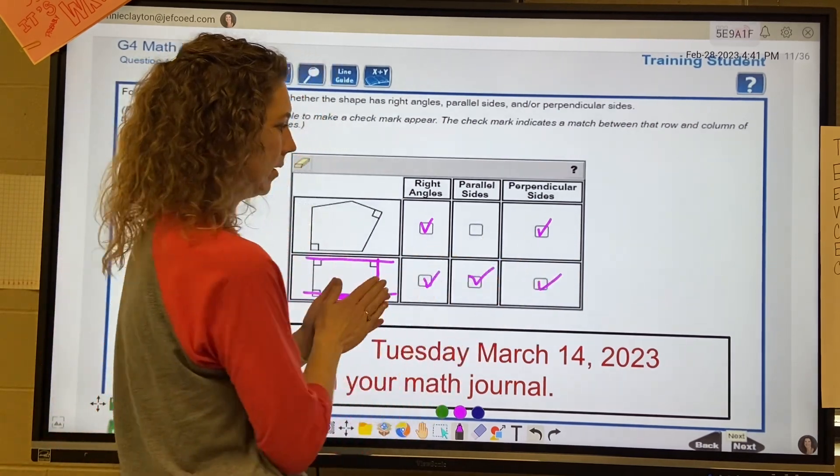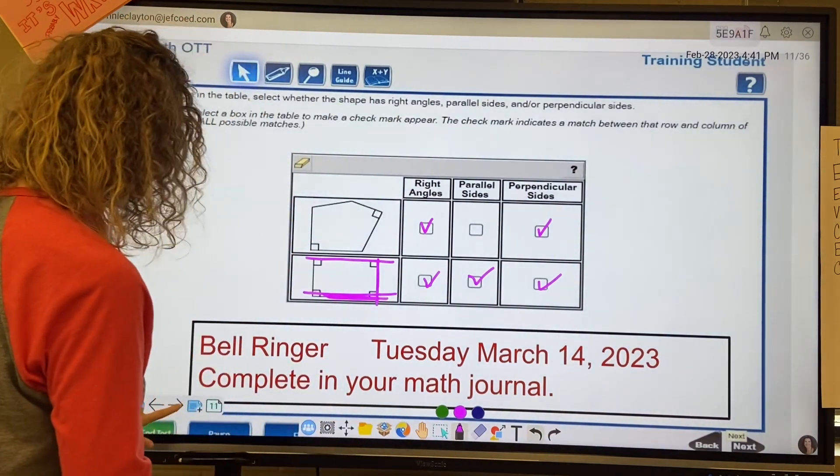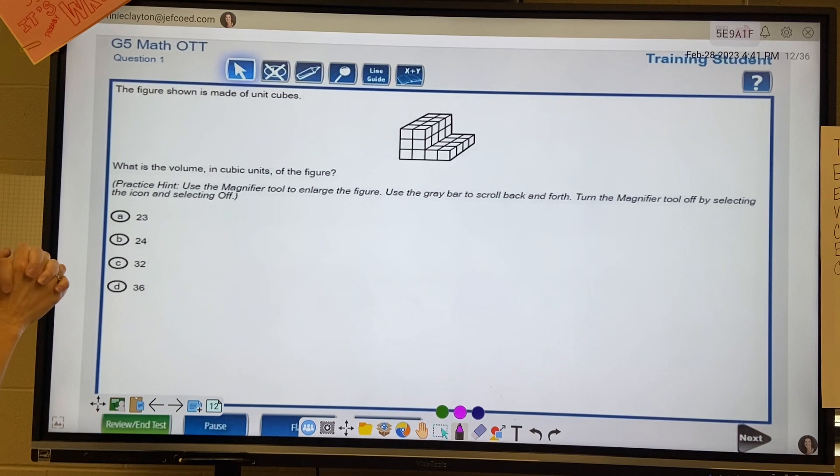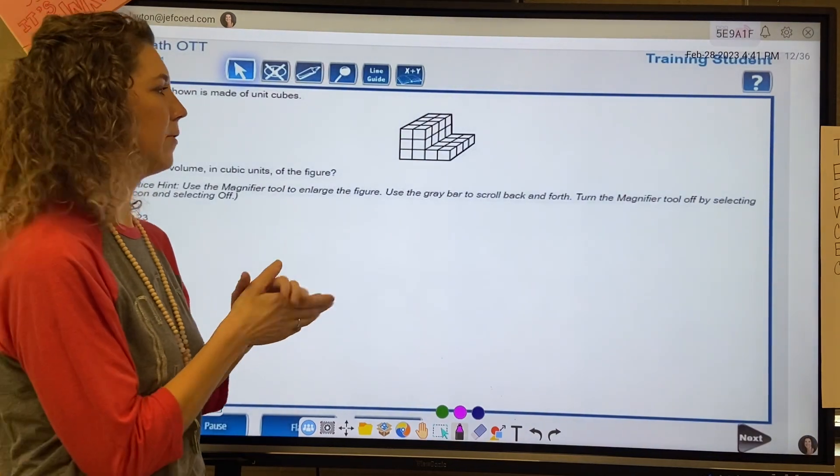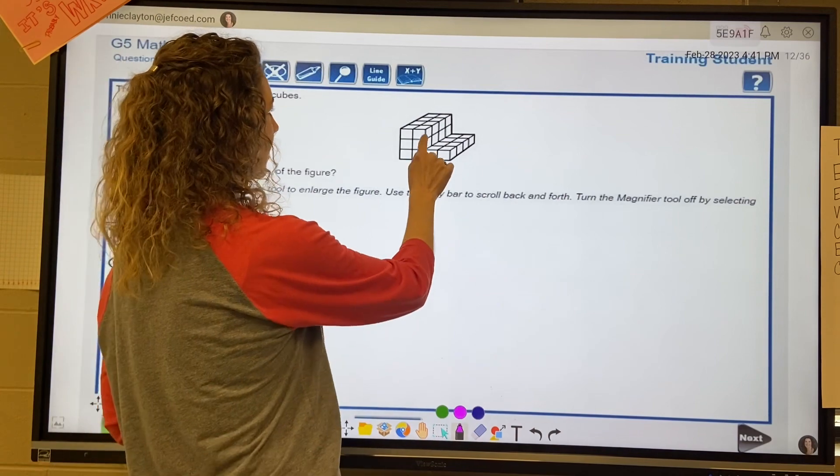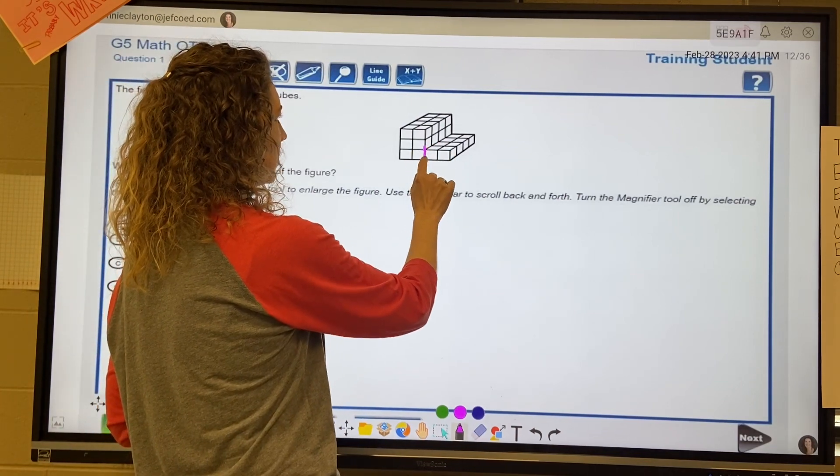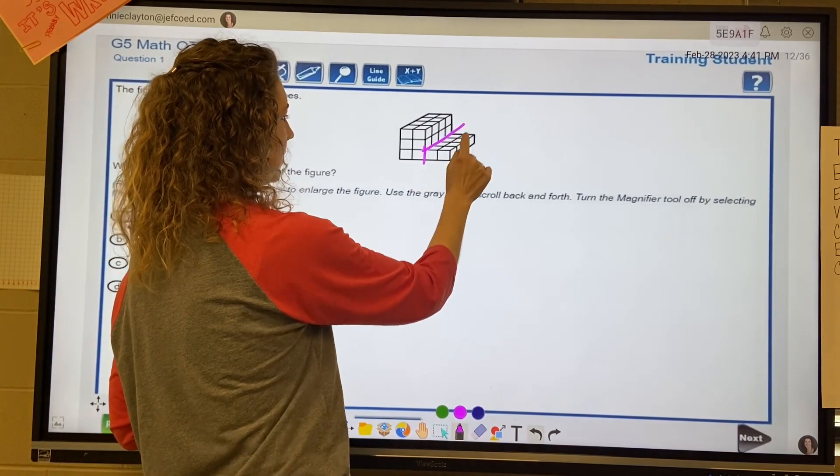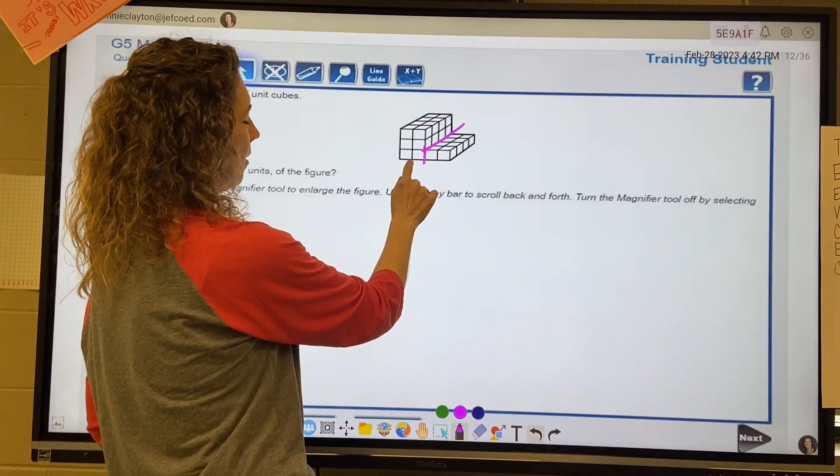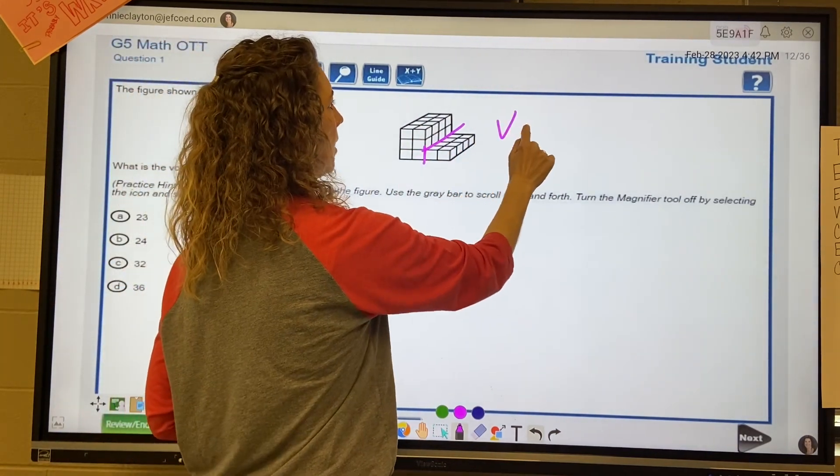Okay, moving on. Bell ringer question number two. The figure shown is made of unit cubes. What is the volume in unit cubes of this figure? Okay, remember fourth grade question. So I would probably cut this into two different shapes and do the volume of this one. Okay, so we have volume equals length times width times height.